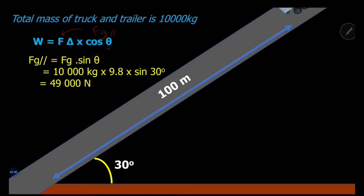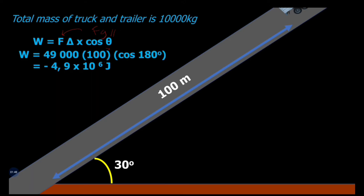FG parallel equals FG·sinθ = 10,000 × 9.8 × sin30° = 49,000 N. So the component of gravity going down the slope is 49,000 N. Now applying the formula: 49,000 acts over 100 meters at an angle of 180 degrees to the direction of motion — measuring anti-clockwise, down the slope is 180 degrees. This gives negative 4.9 × 10⁶ joules.